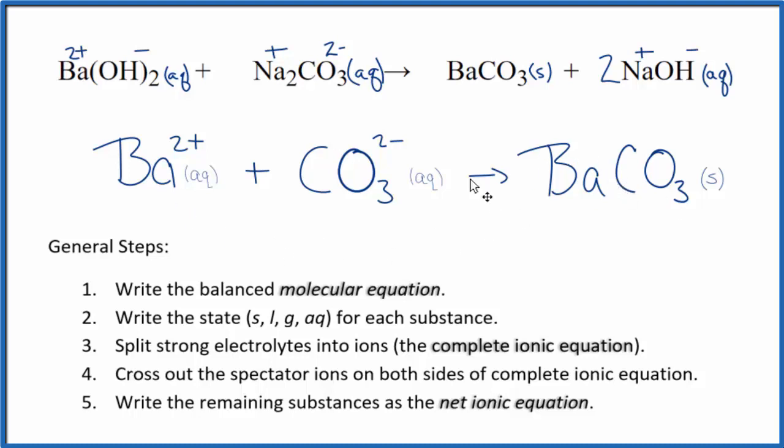So this is the balanced net ionic equation for barium hydroxide plus sodium carbonate. You'll note the charge is balanced. You have a 2+, 2-. Those cancel out, give us a net charge of zero. Over here in the products, this is a neutral compound. So the charge is balanced. Count the atoms up. They're going to be balanced as well. This is Dr. B with the balanced net ionic equation for Ba(OH)2 plus Na2CO3. Thanks for watching.